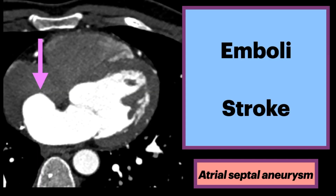Due to turbulent flow within the aneurysm, thrombi can also develop, which can embolize into the brain causing stroke, or other parts of the body causing infarcts.